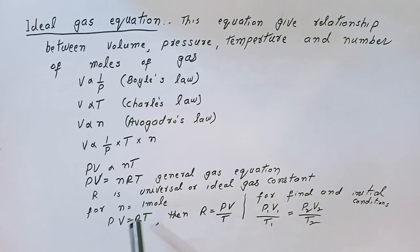When number of moles is 1, then PV is equal to nRT. We put n equal to 1, then PV is equal to RT. Then R is equal to PV over T.